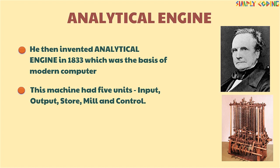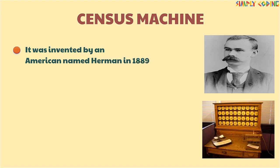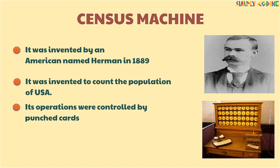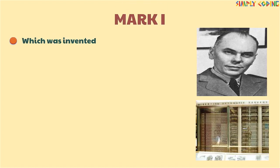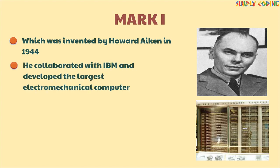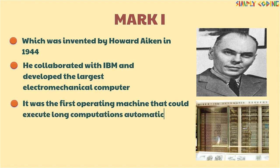Next, the Census Machine was invented by an American named Herman Hollerith in 1889. It was invented to count the population of the USA, and its operations were controlled by punched cards. Then came Mark I, invented by Howard Aiken in 1944. He collaborated with IBM and developed the largest electromechanical computer. It was the first robust operating machine that could execute long computations automatically, and is considered to be the real beginning of the era of the modern computer.